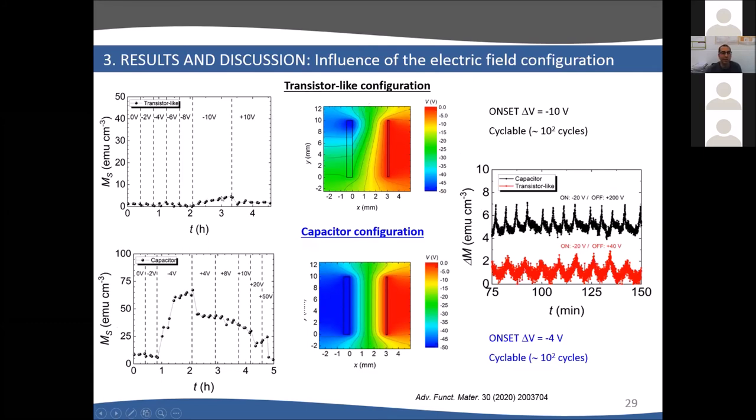Another difference is that in transistor-like configuration, you need to apply at least minus 10 volts to induce the effect, whereas for capacitor configuration only minus 4 volts is enough, and you get even larger increase of magnetization. In both cases, we can cycle the effect many times. This black curve is shifted vertically for clarity. We can do this on-off transition many times, about 100 times. This works in both types of configurations, transistor and capacitor.